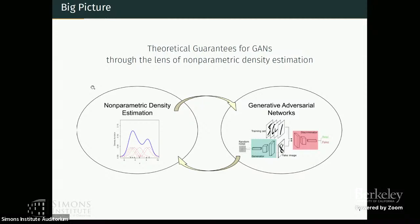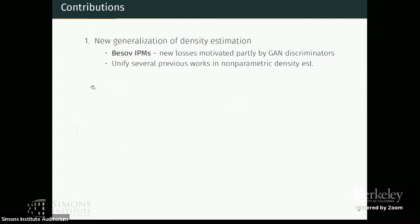So just a quick review. I'm sure that everyone is familiar with this—density estimation is simply the problem of estimating a specific distribution from its samples. And so in short, our contributions were that we generalized this entire framework to new losses that you can think come from GAN discriminators.